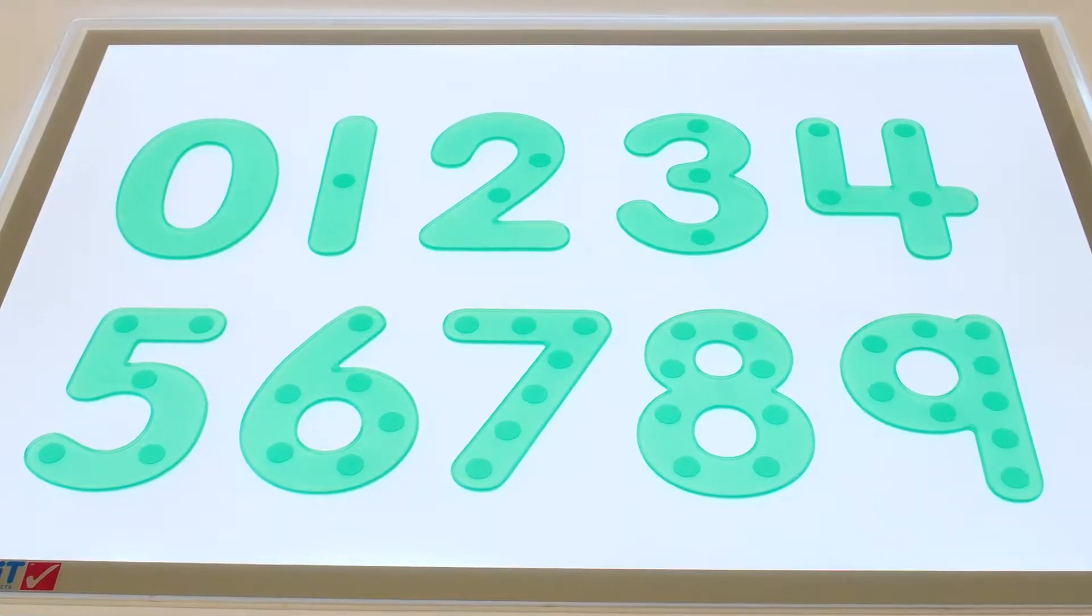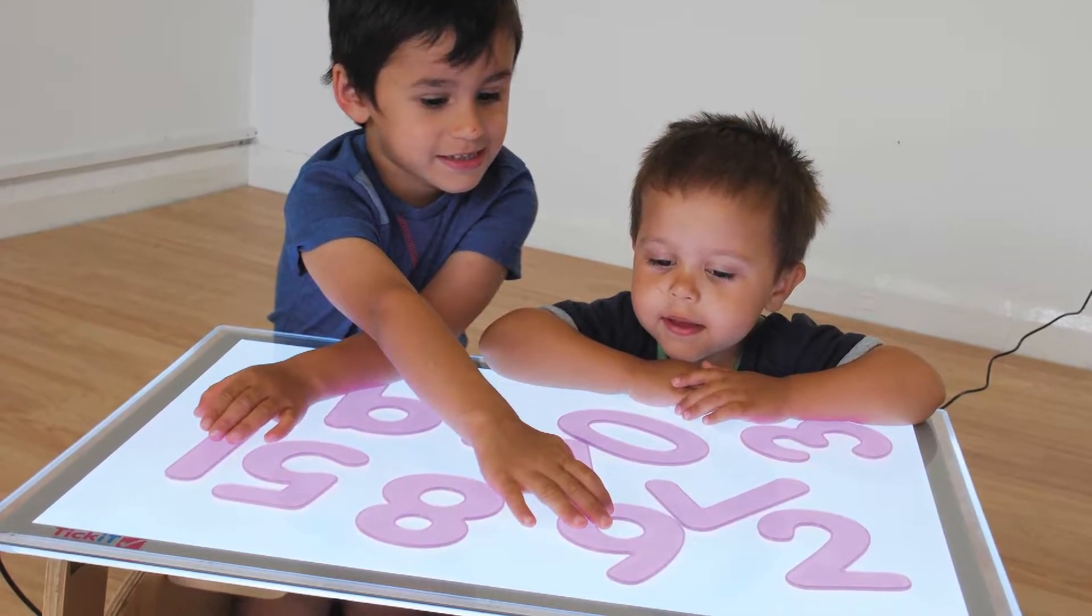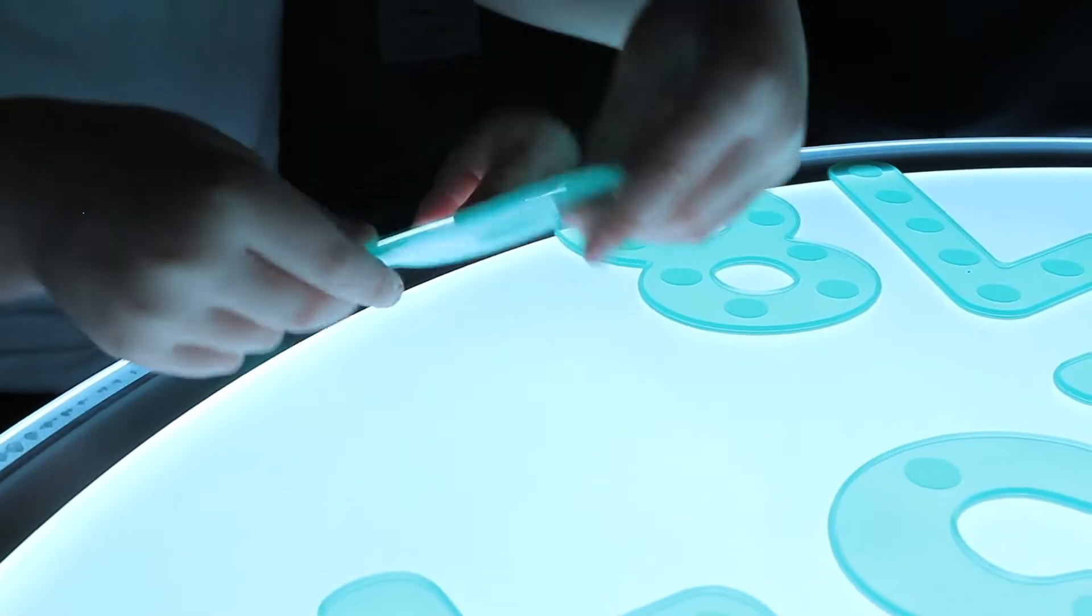SiniShape numbers come in a child-friendly font for easy recognition. They are available as plain numbers in pink, in yellow as trace numbers, and in green as dotted numbers.